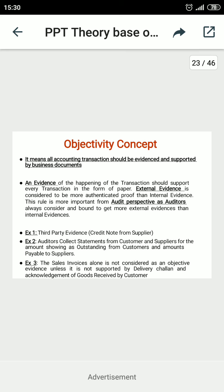Evidence of the happening of a transaction means the transaction is done and should be proved. Evidence can be of two types: external evidence and internal evidence. As per the proof, only external evidence gets more important weightage as authentic proof. Generally, auditors also give more weightage to external evidence over internal evidence.